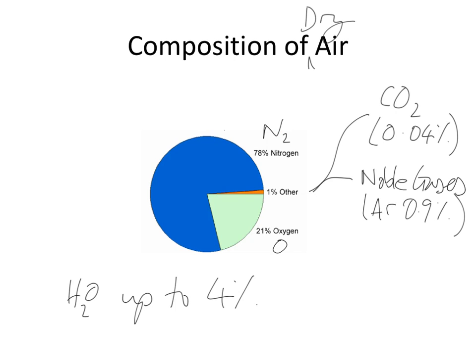Oxygen is an element, O2. Carbon dioxide is made up of two different elements bonded together, so that's a compound, and water is obviously a compound as well. Argon you'll find in group zero; it's a noble gas and that is an element. So that's something to be aware of.